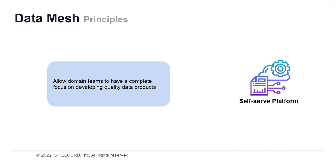Data teams need a platform to build domain-specific data products and serve those data products across business units in a self-sufficient way. However, to allow domain teams such as engineers, domain experts, and owners to have a complete focus on developing quality data products, it is essential to abstract the infrastructure to facilitate self-service.